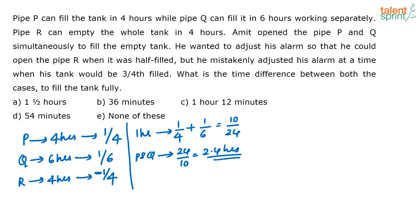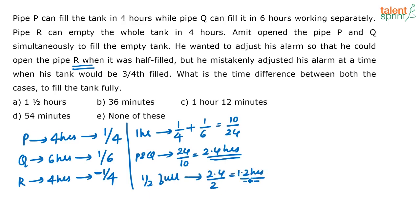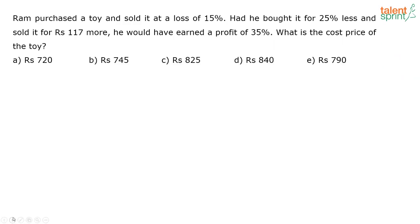P and Q put together can fill this tank in 2.4 hours. Amit's plan was to open pipe R when the tank was half full. So when will the tank be half full when only P and Q are open? The tank will be half full at 2.4 divided by 2, or 1.2 hours. This is the time Amit was actually planning to open pipe R.